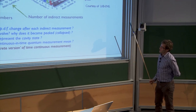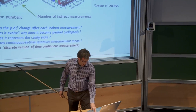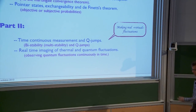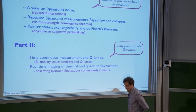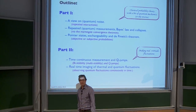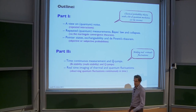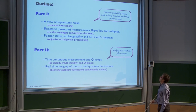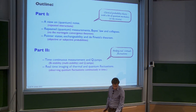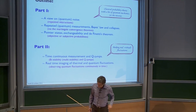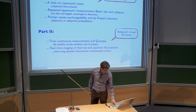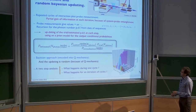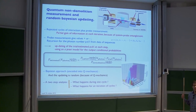The first part of the talk explains this progressive collapse — what it means to update the probability distribution function and why it collapses. The second part uses this notion to describe what it means to measure a quantum system continuously in time, and uses it to describe quantum thermal fluctuations.